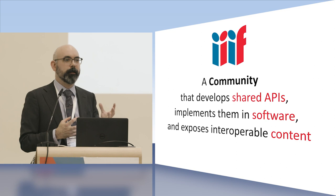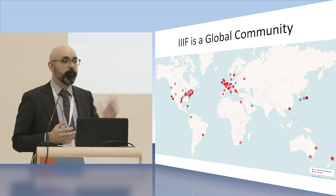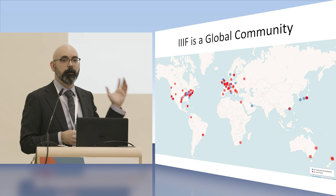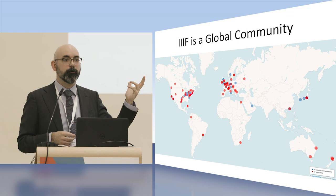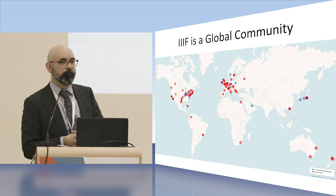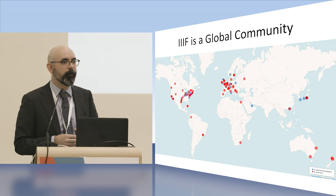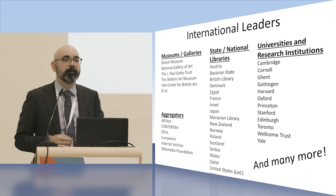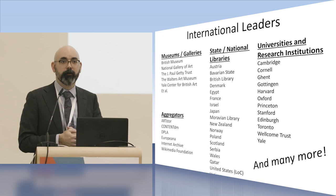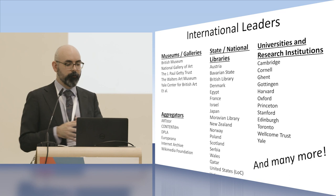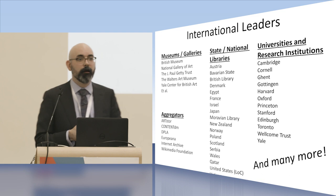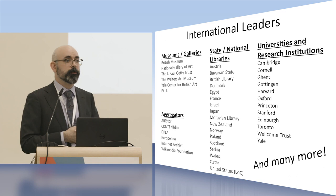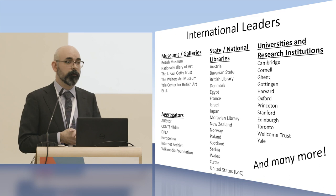Over the last nearly 10 years, it's grown to be a truly global community. You can see here both the formal consortium members as well as implementing institutions that we know about — and this is almost by definition out of date. You can see a high-level list of large-scale institutions that are international leaders in IIIF: museums and galleries, state and national libraries, research institutions like Göttingen, and increasingly aggregators like ArtStore, ContentDM, Europeana, and DPLA, who are helping smaller institutions become IIIF-compatible and enabled.